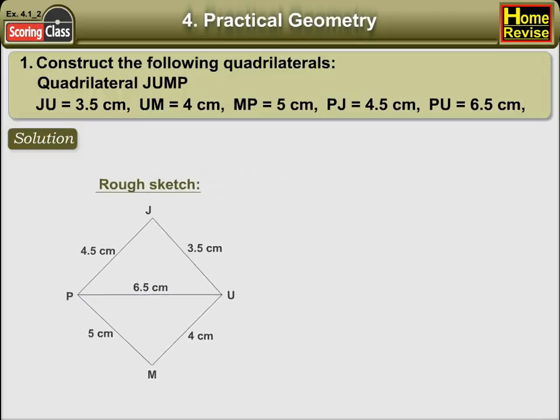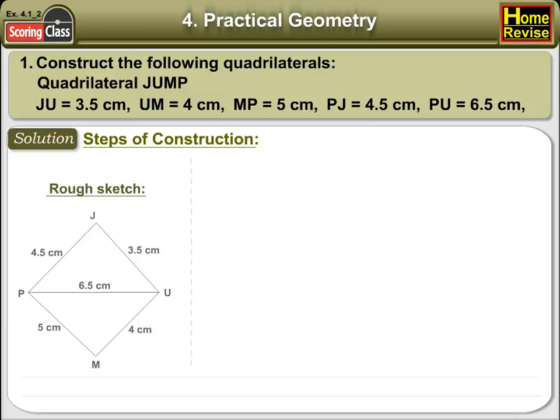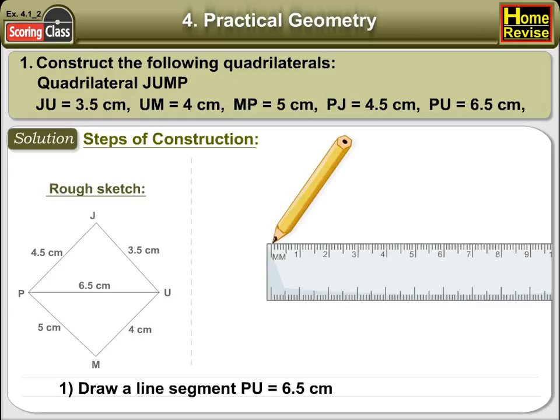Solution. Steps of Construction. 1. Draw a line segment PU is equal to 6.5 cm.